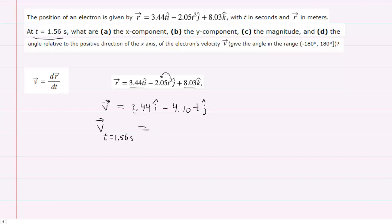Now there is no more variable t for the i hat component, so we're just going to keep that as 3.44. And then we'll plug in for t the 1.56 seconds. Again, the 3.44 stays the same.